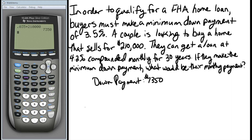What a down payment does is — this is money that I'm bringing forward to the actual purchase of this home, and this is money that I'm not going to have to get a loan for. So if the value of the home is two hundred and ten thousand, seven thousand three hundred and fifty dollars of that two hundred and ten thousand isn't going to need a loan. So what I need to do in order to find the present value is take the down payment as a negative and apply that to the selling price.